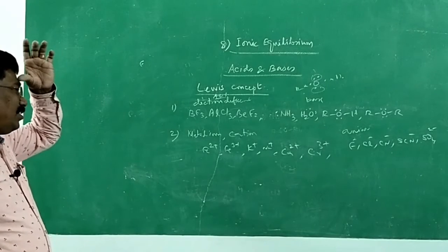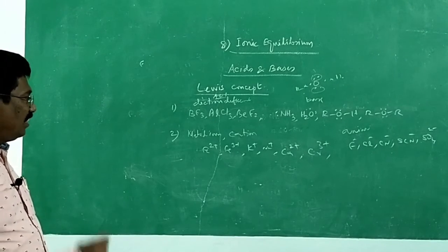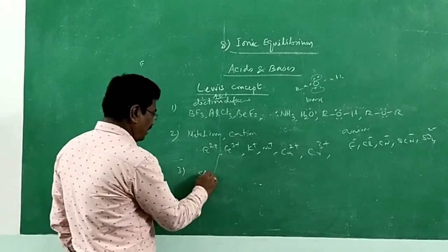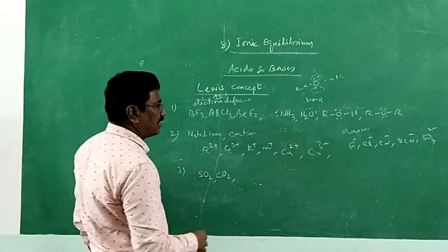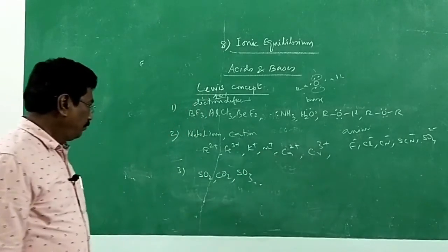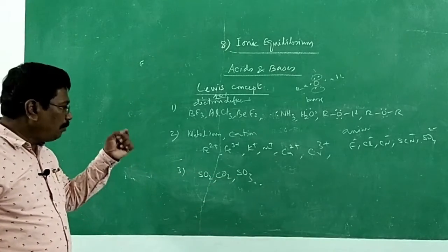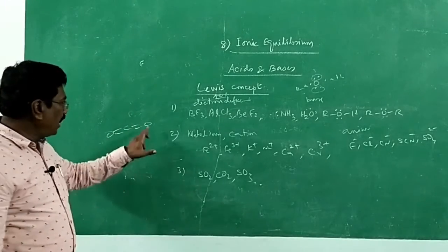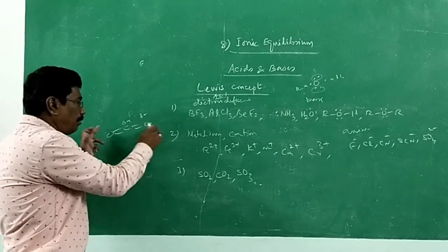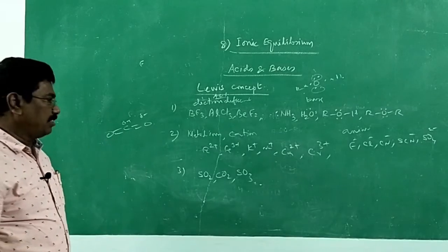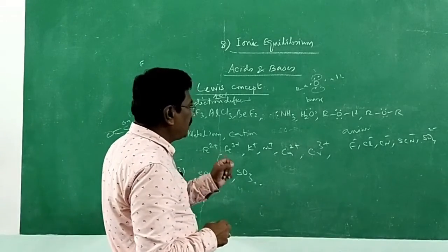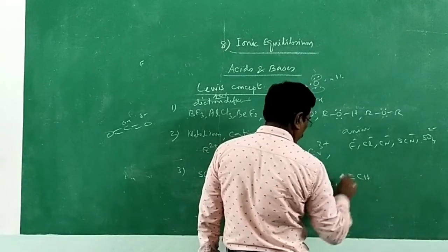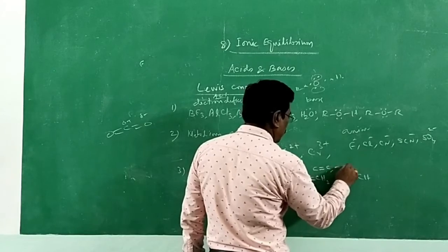Polar molecules which have double bonds within them can also act as Lewis acids. Molecules which have polar double bonds — such as non-metallic oxides like SO₂, CO₂, SO₃ — have polar double bonds with delta-plus and delta-minus charges. Oxygen is electronegative, carbon/sulfur are electropositive. These molecules can accept an electron pair from some other substance. Also, molecules which have carbon-carbon double bonds or triple bonds — like ethylene and acetylene — can act as Lewis bases because the pi bond can be cleaved and donate electron pair.